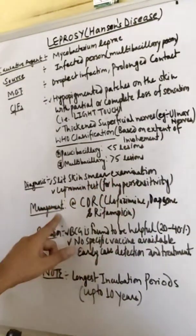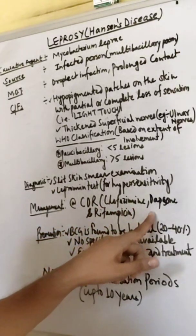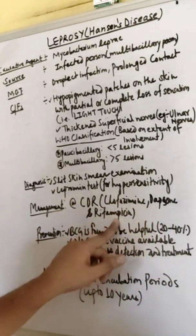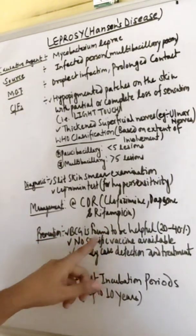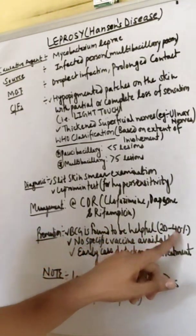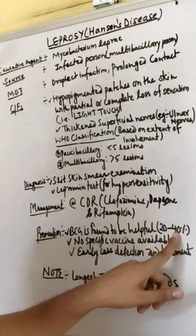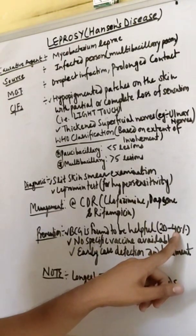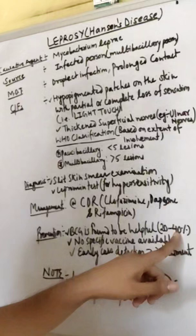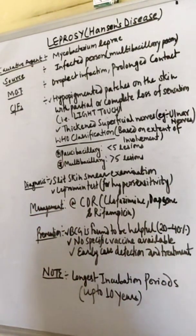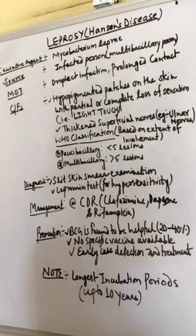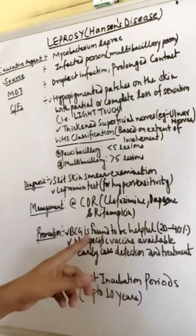Prevention: BCG is found to be helpful for 20 to 40 percent because leprosy will also occur inside. BCG vaccination is done in children or infants since birth. It is helpful in 20 to 40 percent of cases. There is no specific vaccine available till now for leprosy.